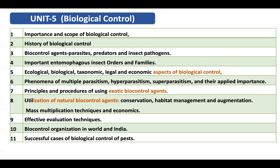The third topic is biocontrol agents: parasite, predator, and insect pathogen. You need to know the differentiation between them. A parasite is an organism that grows in or on the host insect and kills it slowly. A predator kills and devours the host immediately. An insect pathogen causes disease in the insect and slowly kills it through that particular disease.